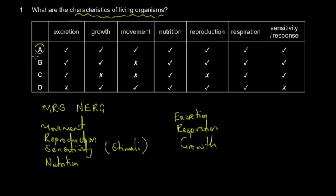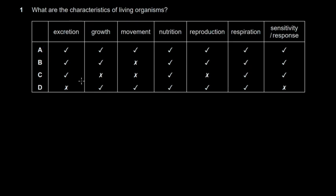So you have excretion, growth, movement, nutrition, reproduction, respiration, and sensitivity. That was a tricky question because you had to check all options. Remember the MRS NEG mnemonic — recall it and fill in what each letter represents. Let's quickly move to question two.